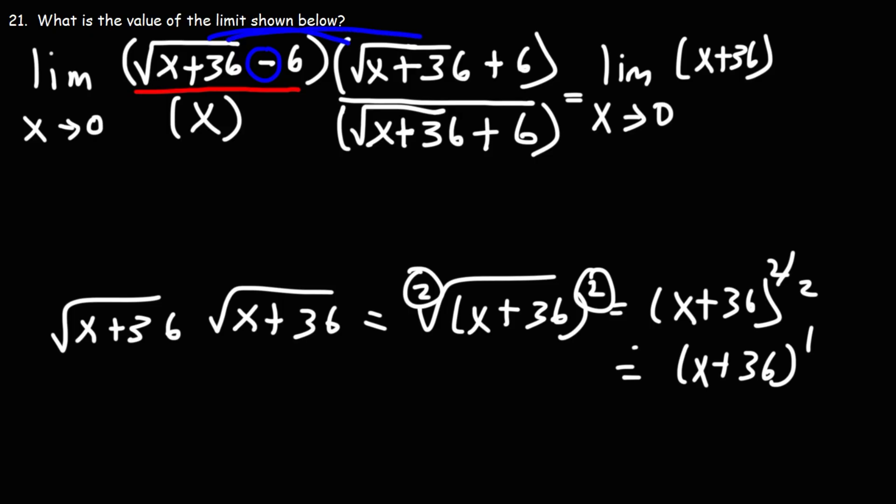Now, when we multiply these two terms, we're going to get positive 6 square root x plus 36. And when we multiply these two terms, we'll get negative 6 square root x plus 36. Those two terms will cancel. If you write it out, you'll see that they'll cancel. And then if we multiply negative 6 by 6, we'll get negative 36.